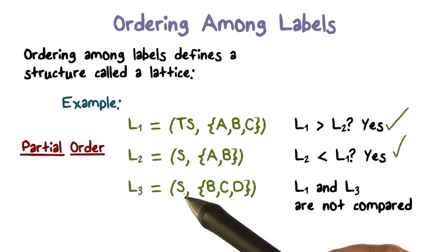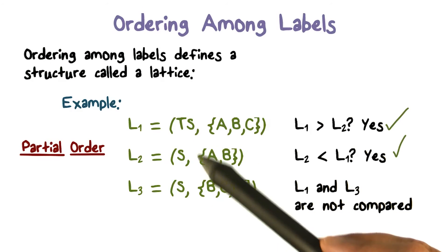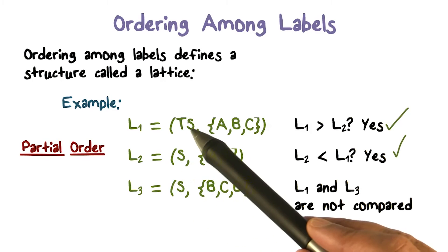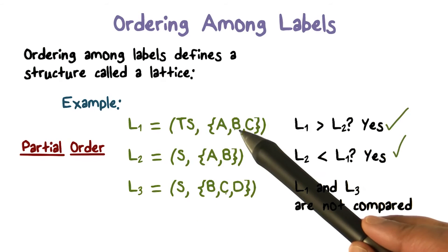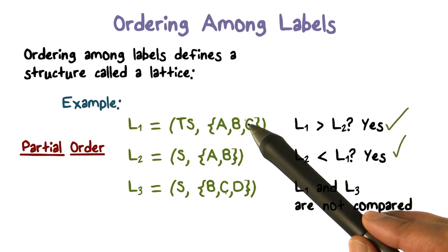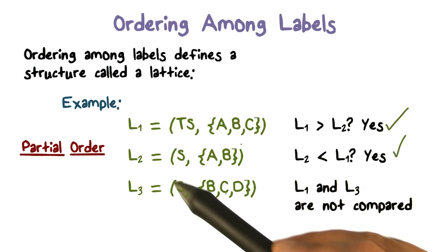How about L1 and L3? We know TS is higher than S. So when you look at the first part, just the sensitivity level, that's the total order. So this is greater than this, but BCD is not contained in ABC. There's this element D that's not contained here, and because this is not contained here, then L1 is not greater than L3.